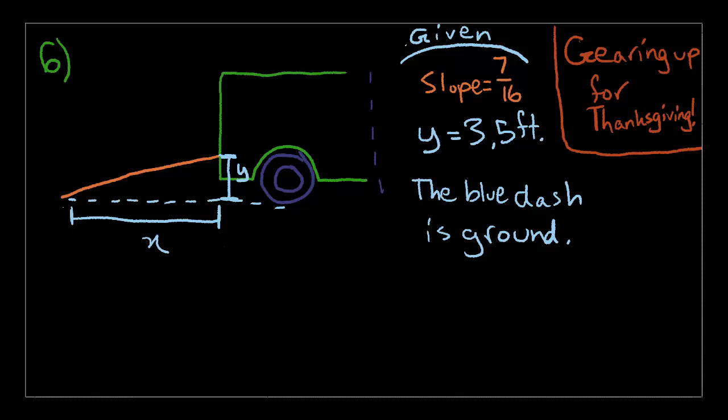So let's get started on number 6. This is my attempt at drawing whatever was drawn in the book. It's supposed to be a truck, and that orange line is supposed to be a ramp. The problem is, a ramp is extended from the truck to the ground, as shown in the figure. Figure not to scale, always remember that.